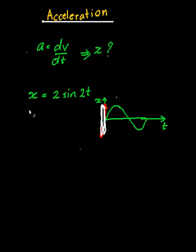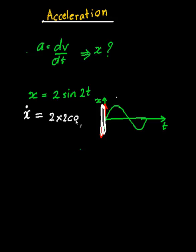Now I'm going to take the first derivative with respect to t. I'll use dot notation: one dot means differentiate once with respect to time, two dots means twice, and so on. So ẋ (x-dot) is going to be 2 times 2 times cos(2t). I'm going to leave it in this form — there's a reason for that.